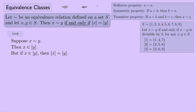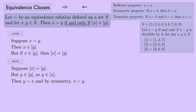Now the other direction: suppose [x] equals [y]; we want to show x is equivalent to y. We know y is an element of [y] — that was the first thing we proved. Since [x] = [y], y must also be an element of [x], meaning y is equivalent to x. By symmetry, x is equivalent to y.